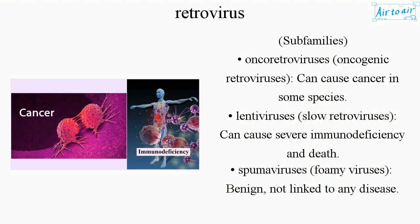Subfamilies: Oncoretroviruses — oncogenic retroviruses that can cause cancer in some species. Lentaviruses — slow retroviruses that can cause severe immunodeficiency and death. Spumaviruses — foamy viruses, considered benign and not linked to any disease.